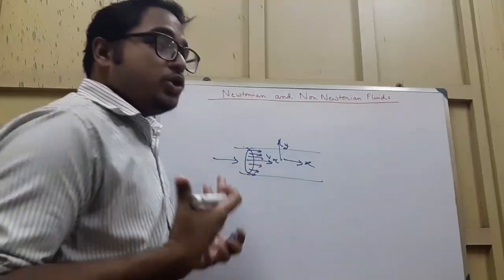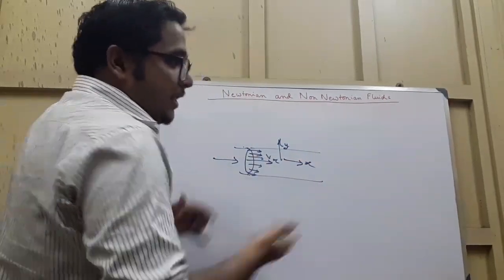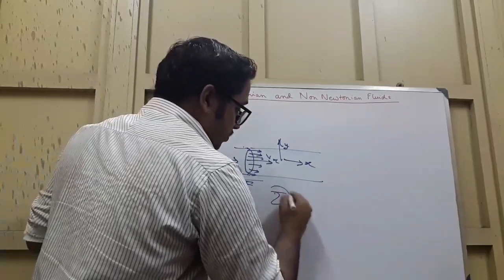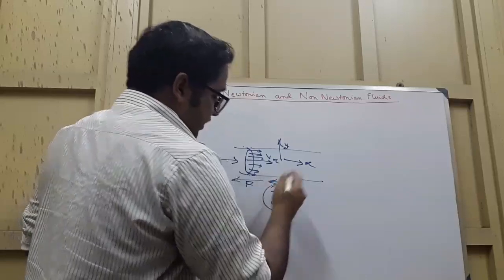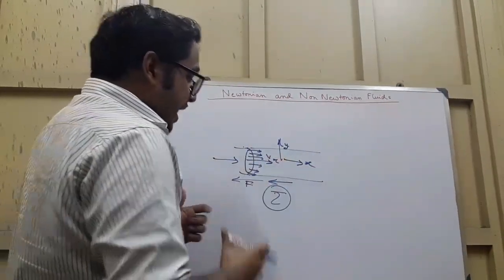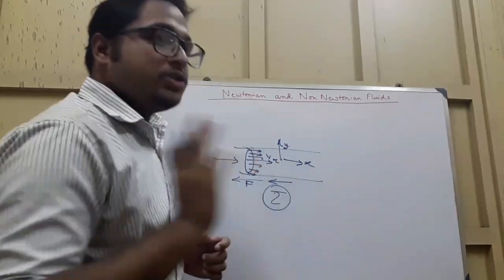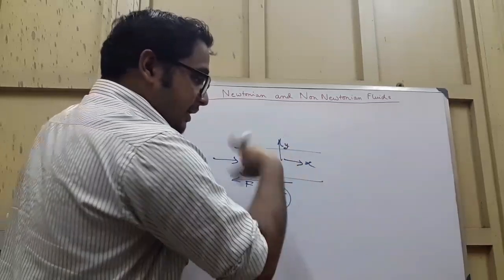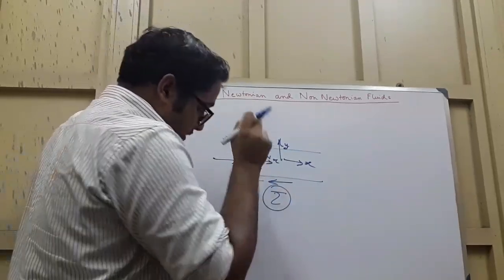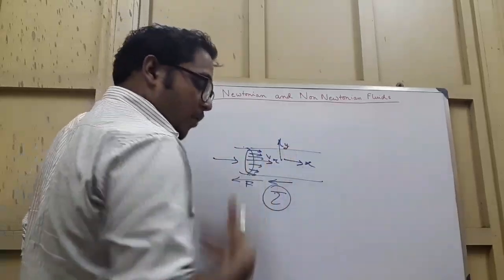Why does no-slip exist? There must be some force restraining the fluid motion — that force F divided by the area gives shear stress tau. Tau acts in a direction opposite to the fluid flow, restraining its motion. Hence at the boundary walls the fluid attains zero velocity, and at the center the velocity is maximum because shear stress decreases through the layers toward the center.